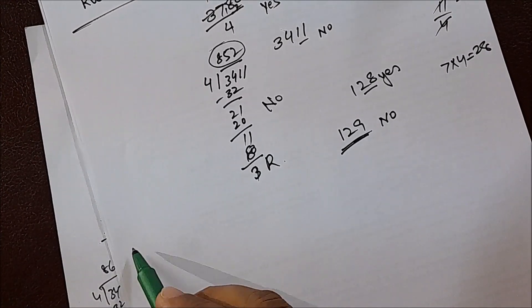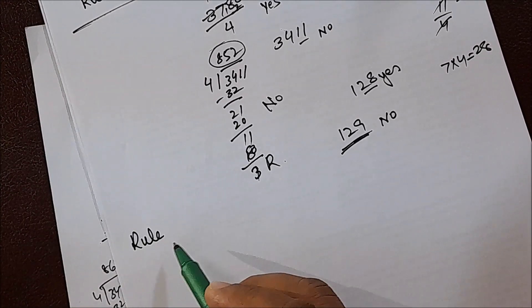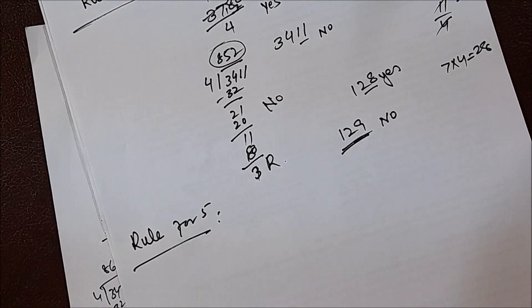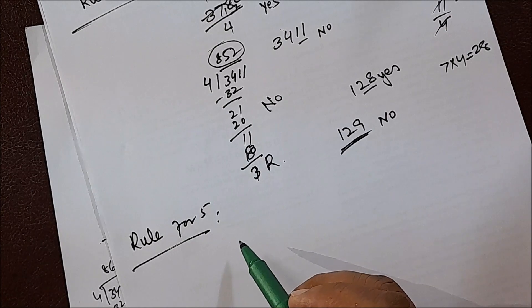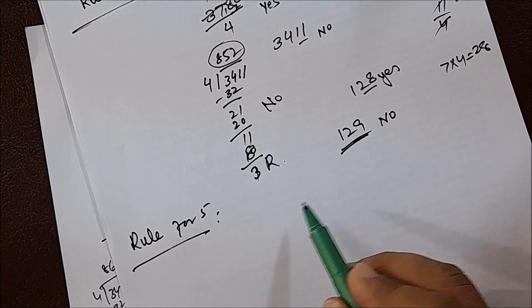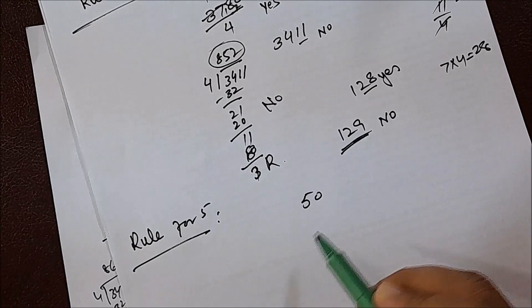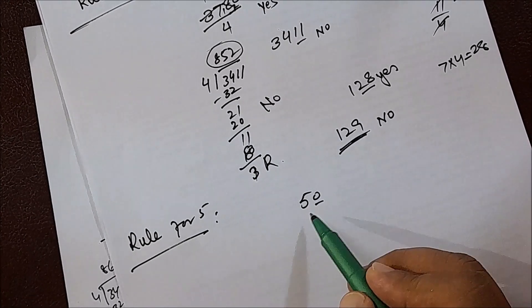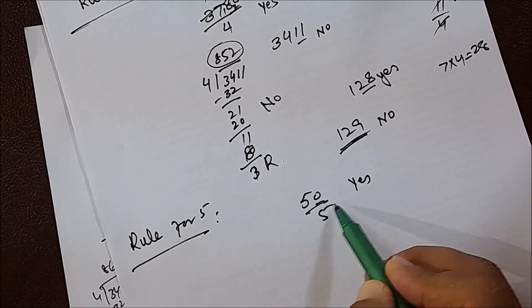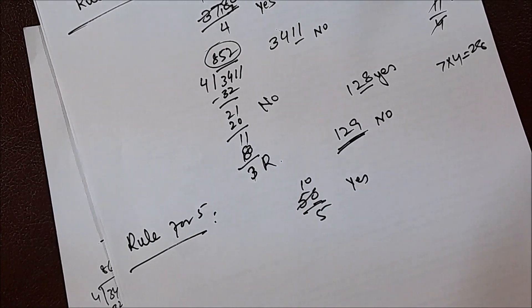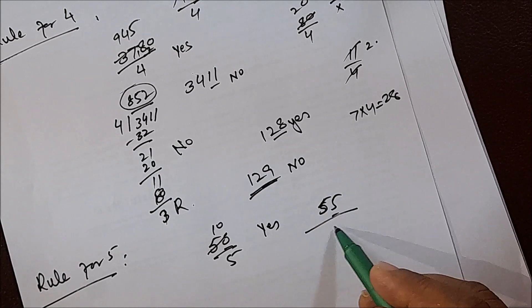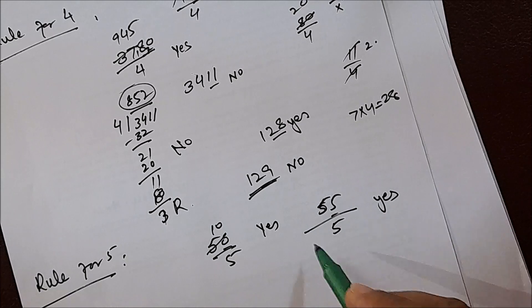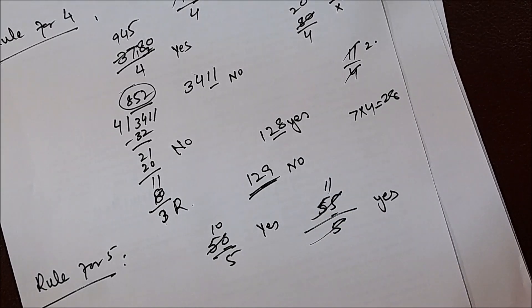Now I will explain the rule for 5. If the unit digit of a number is 0 or 5, we will say yes, this number is divisible by 5. For example, if the unit is 0, this number is divisible by 5. If the unit is 5, this number is also divisible by 5.